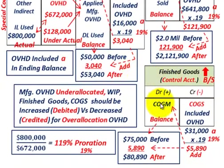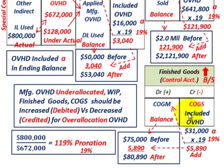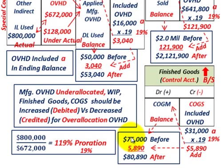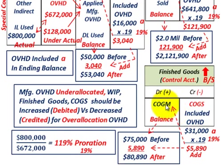Now let's move to finished goods. The cost of goods manufactured would have been credited out of work in process and debited here in finished goods. You need to know what overhead was included in the finished goods balance at year end — that was $31,000. Take $31,000 times the 19% proration rate and you get $5,890. Add that to the ending balance in finished goods before adjustment, which was $75,000, and you get an ending balance of $80,890 after adjustment. We would debit that prorated amount to the finished goods account.